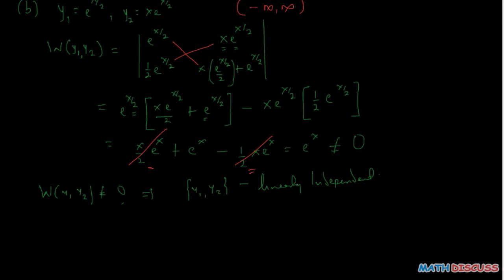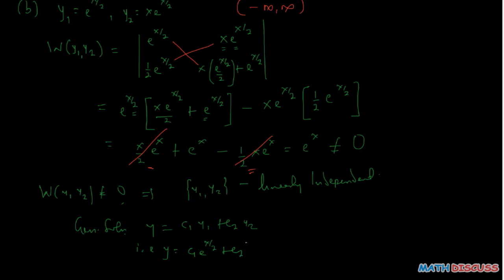Since they are linearly independent, they form the basis of the solution space of the differential equation. This implies the general solution can be written as a linear combination of the basis: y equals c1·e to the power x over 2 plus c2·x·e to the power x over 2. And that completes the problem.